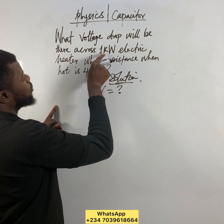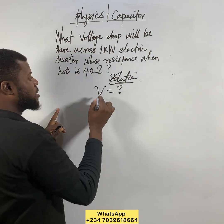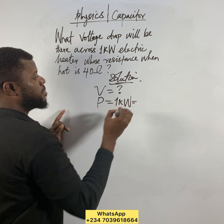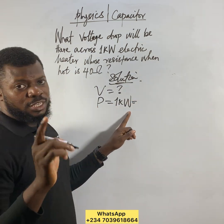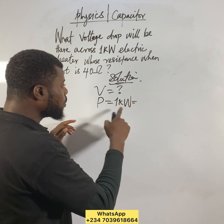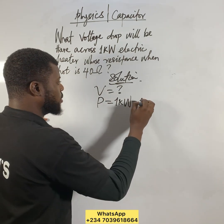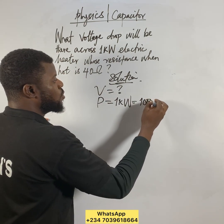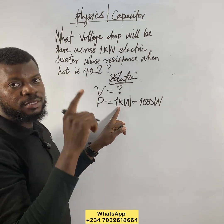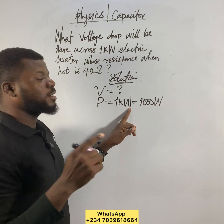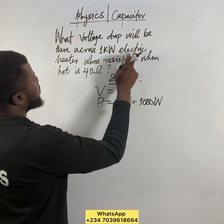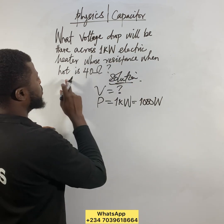Now, the unit for power — they give us one kilowatt. I need to convert that because one kilowatt equals one thousand watts. Kilo means 10 to the power of three, so one kilowatt is one thousand watts. That's the next value we have.